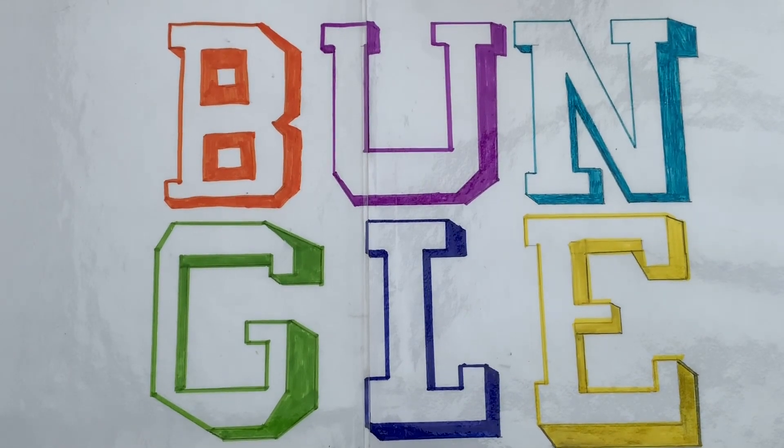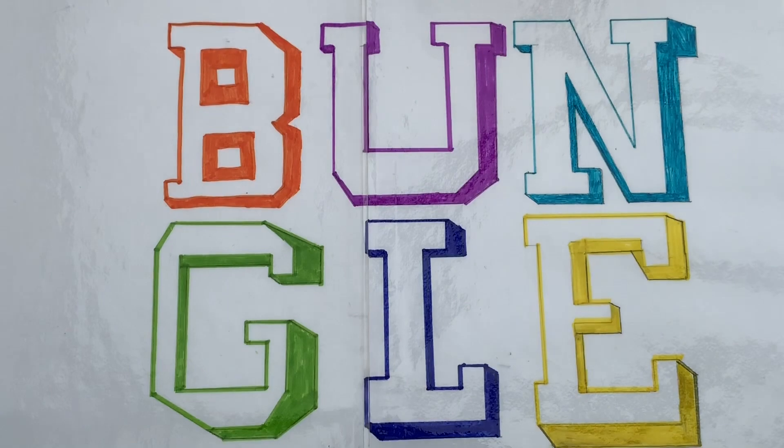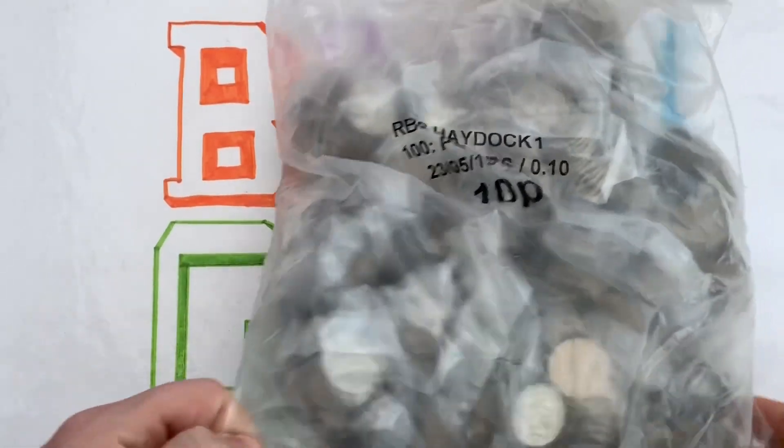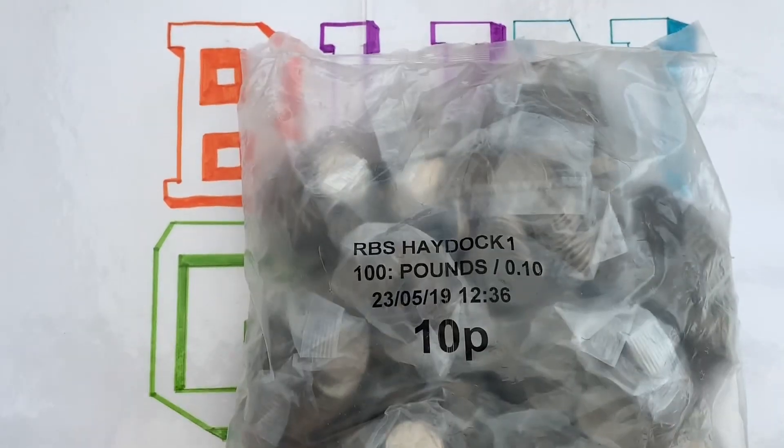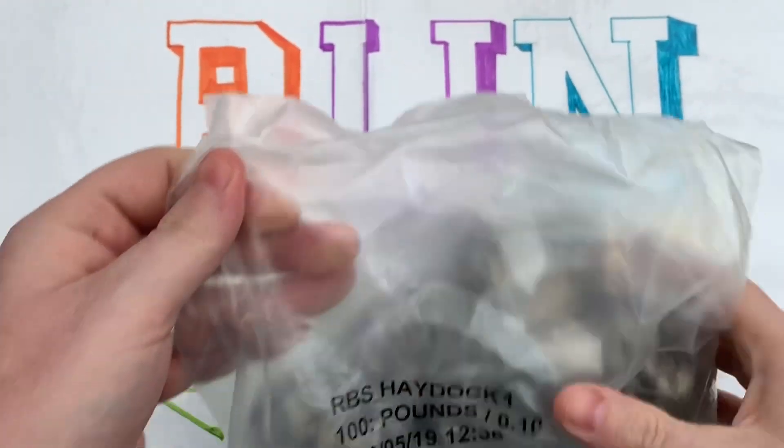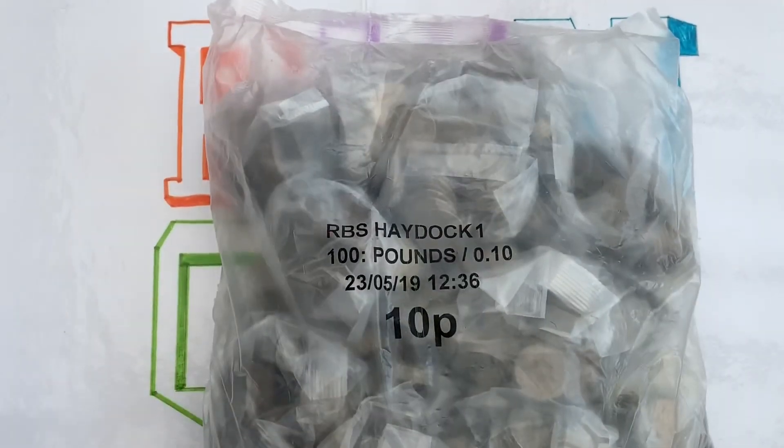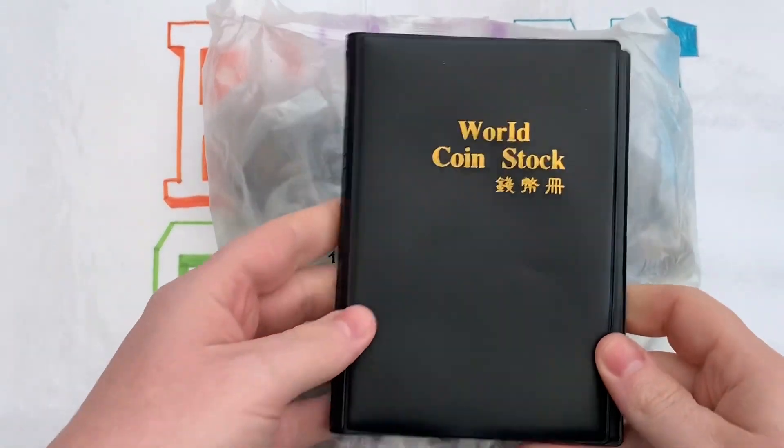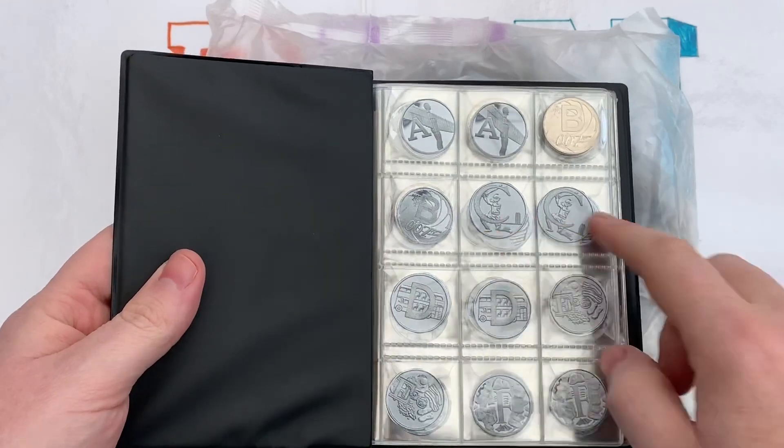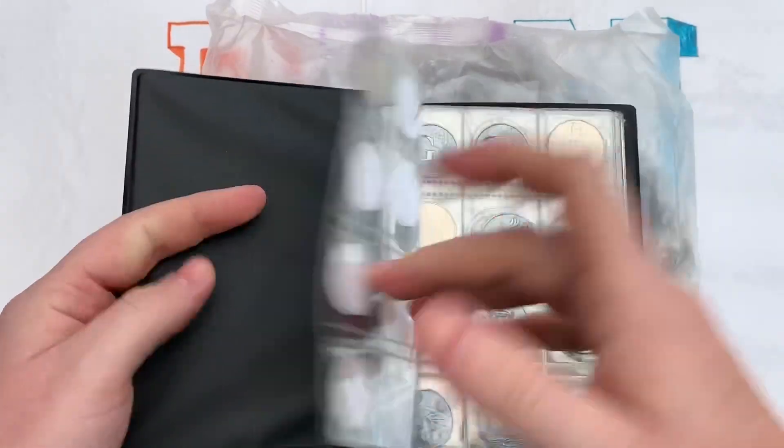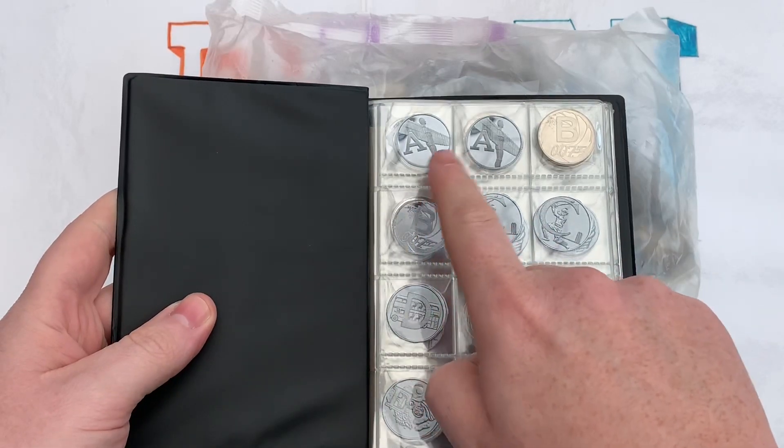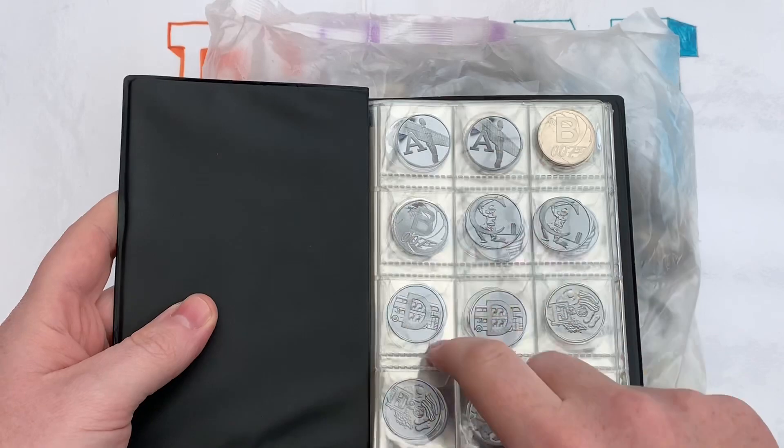Hello and welcome to another episode of Bungle Collects. We've got a 10p hunt for you today and luckily we've got £100 of sealed bags inside this sealed bag of 10ps. We've got them from the bank so we're really looking forward to having a good hunt through these. Let me show you what me and Lady Emma are looking for. So this is our new coin book and what we've done is we've put the letters in as we've found them and the idea is we want the 2018 and the 2019 coin next to each other.